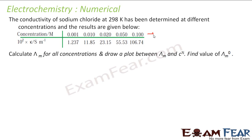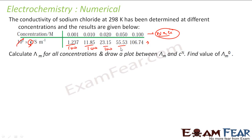We are given the conductivity values of NaCl for various concentrations. Conductivity k is obtained by dividing the given values by 100. We need to find λm for all concentrations, then plot λm against √c to determine λm⁰ — the molar conductivity at infinite dilution.